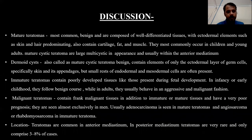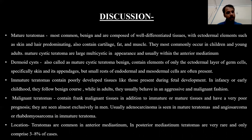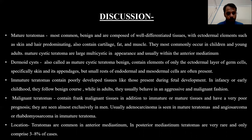Mature teratomas are the most common type. They are benign, composed of well-differentiated tissue from ectodermal lineages such as skin and hair, and also contain fat, muscle, and cartilage. They are most commonly seen in children and young adults. Teratomas in situ are also mature teratomas. Immature teratomas are poorly defined and contain cells and tissues of fetal development. They follow a benign course in pediatric patients; however, in adults they follow aggressive and malignant courses. Malignant teratomas contain malignant fetal tissue in addition to mature and immature tissues. Teratomas are uncommon in the mediastinum; they are mainly seen in the anterior mediastinum. It is rare to find posterior mediastinal teratomas.